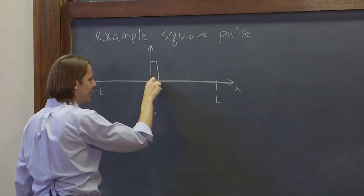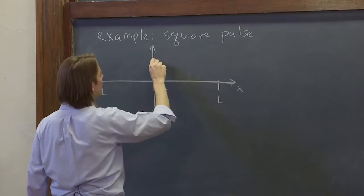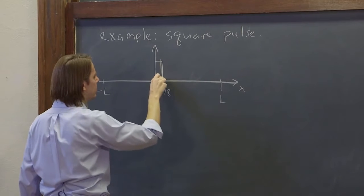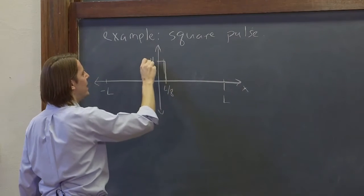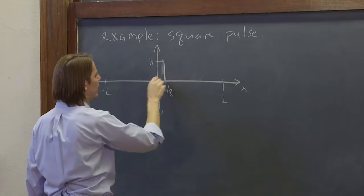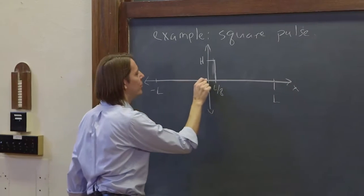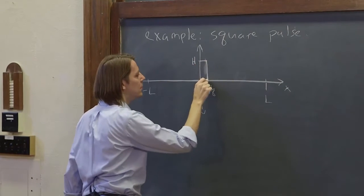Something like that. And the height of the pulse we'll just call h. So it gets up to h on the y-axis from 0 to l over 8, and then it's 0 everywhere else. So it's just a small pulse in the domain minus l to l.